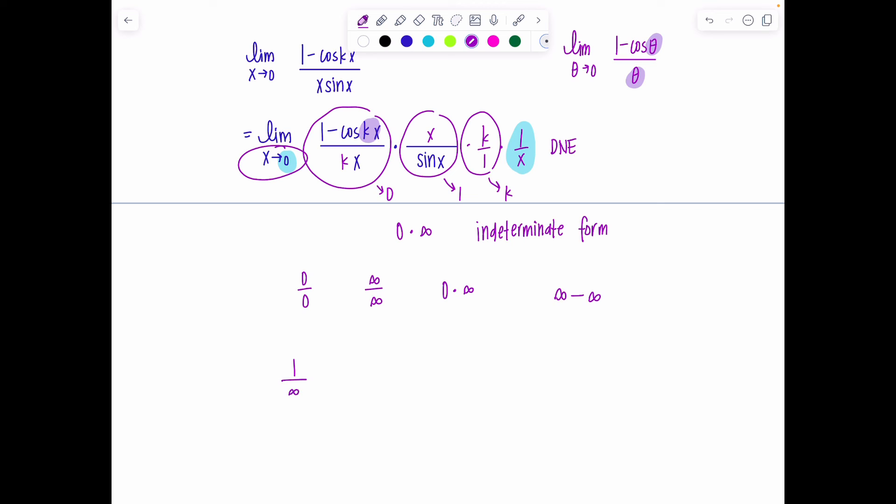The reason why we call these indeterminate forms is because they don't always have a set rule for what the limit's going to be. Like for example, if you have 1/infinity, that's always going to zero. That's set. That's not indeterminate. But 0/0 sometimes approaches 1/2, sometimes approaches 1, sometimes goes to infinity. It cannot be determined when it is written in this format. It is indeterminate.